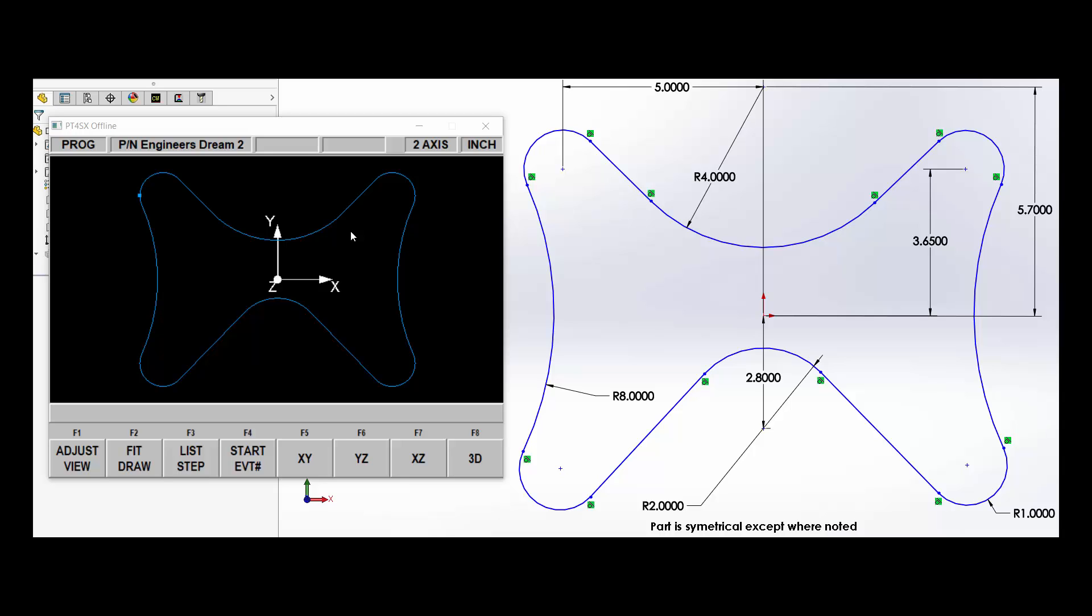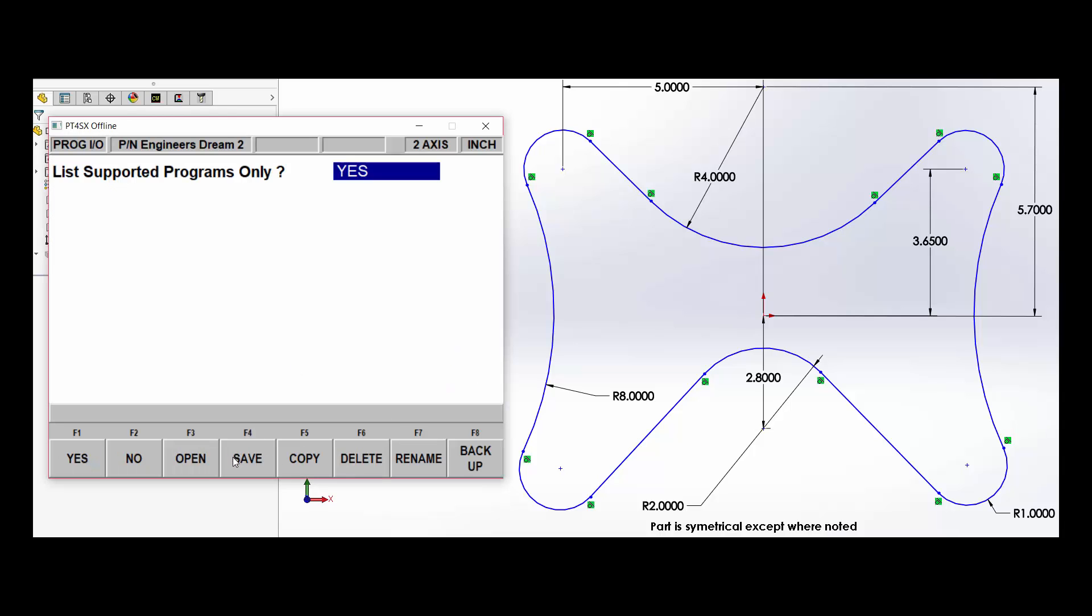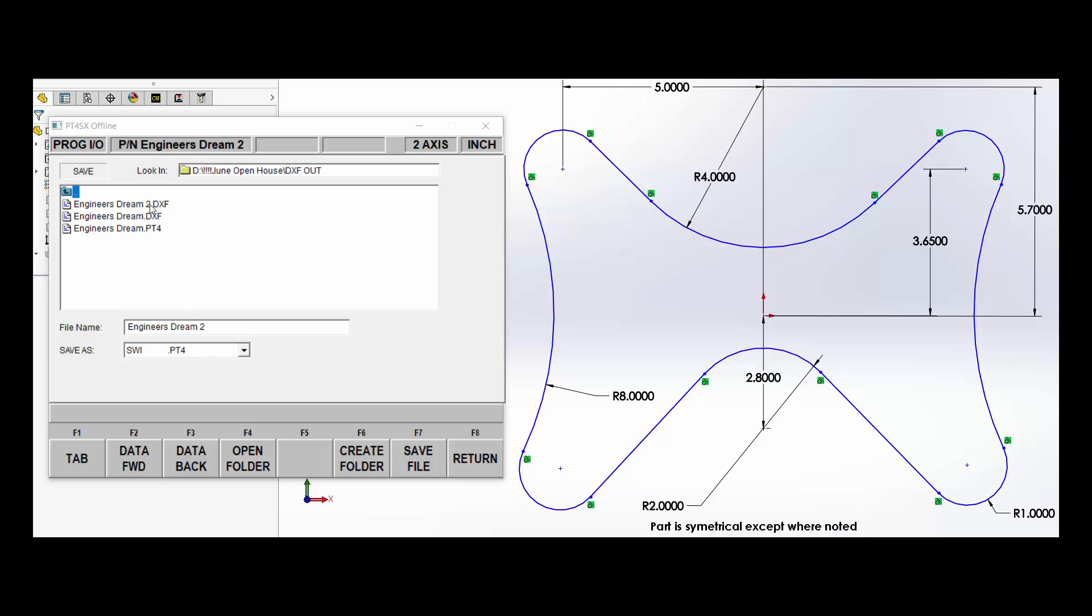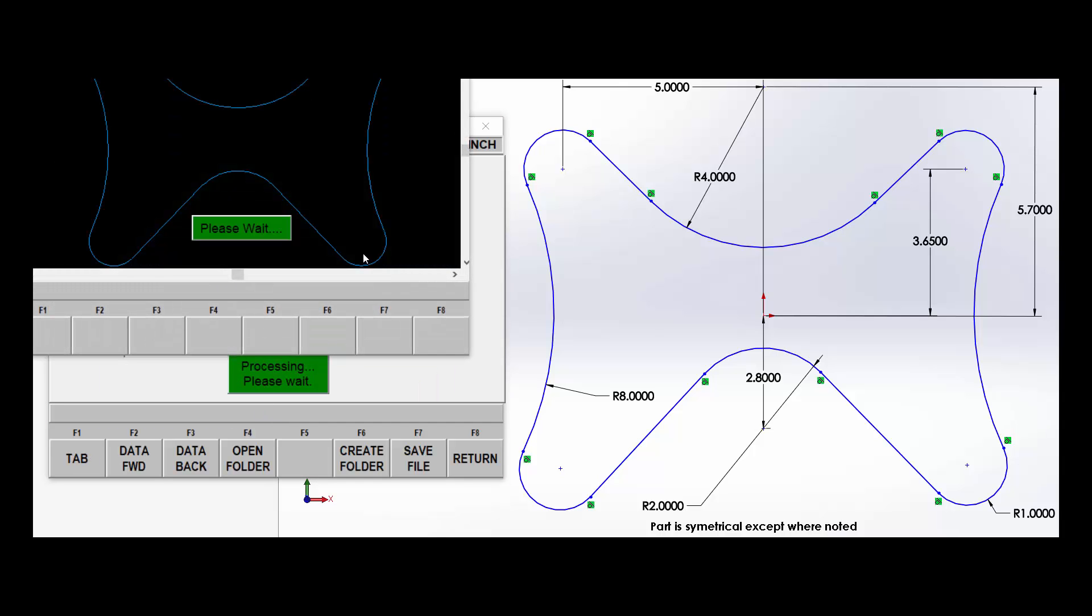Using the ProtoTRAK DXF option, what we'll do is we'll go to Programming Out, Save, and we'll save that as a DXF file. It says do you want to overwrite the old one? Yes, we will overwrite it with this new stuff.